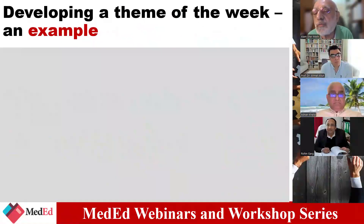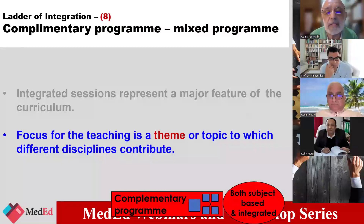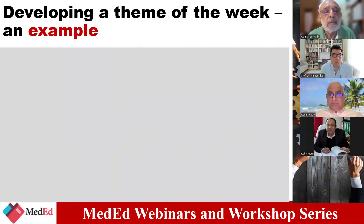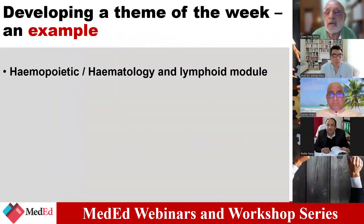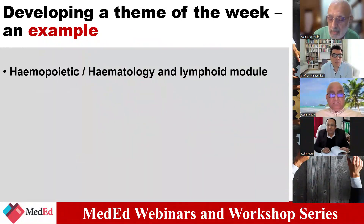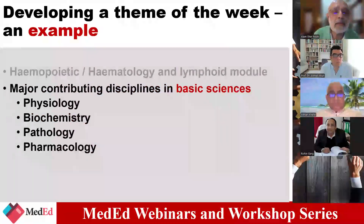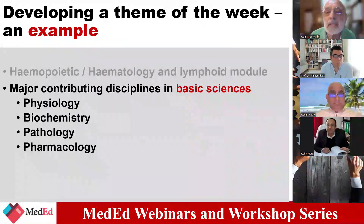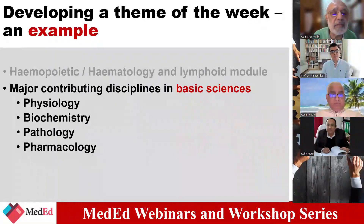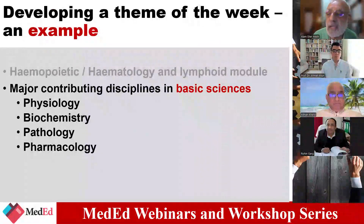Now let's see how we develop the theme, because this level is based on themes. So let's talk about a module on hemopoietic, hematology and lymphoid. First we identify the major contributing basic science disciplines in that module — in this hemopoietic module, the major contributing disciplines would be physiology, biochemistry, pathology, and pharmacology.